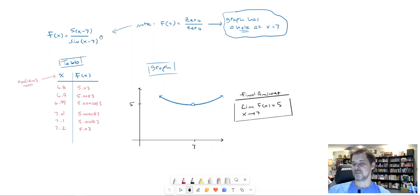Notice about this function that when I put 7 in for x, I get 0 over 0. So I get 7 minus 7 on top, that's 0 times 5, 0 on top, and then on the bottom I get sine of 0, 7 minus 7, which is 0. Now what that will mean when we get for a certain value of x that our function is 0 over 0, there will be a hole in the graph at that point.